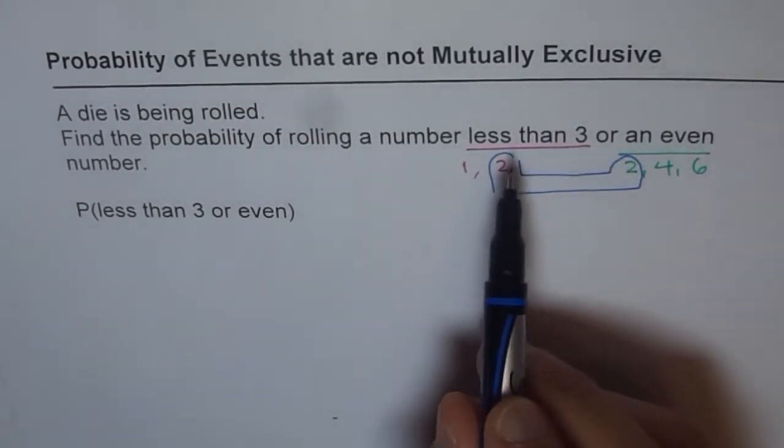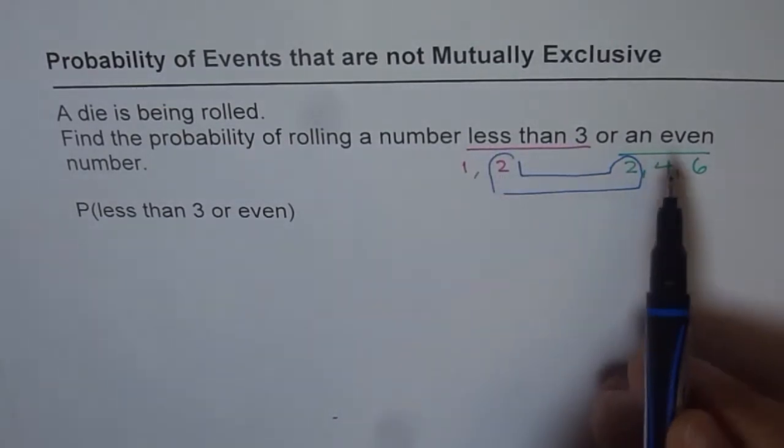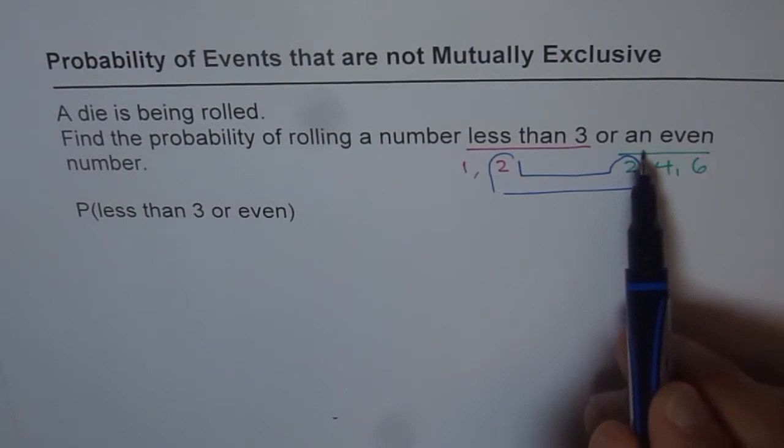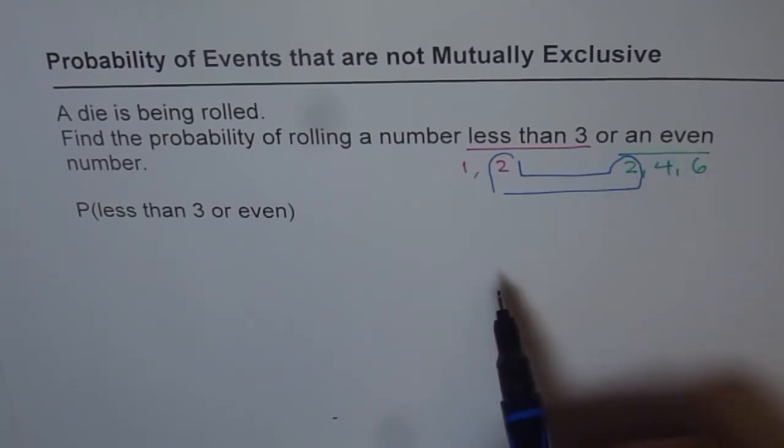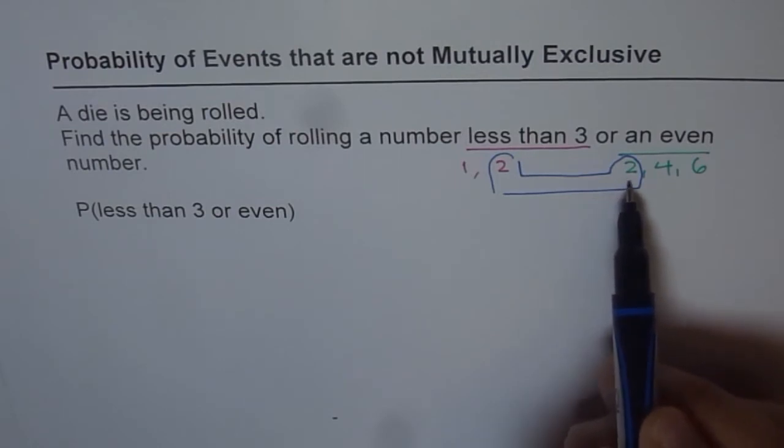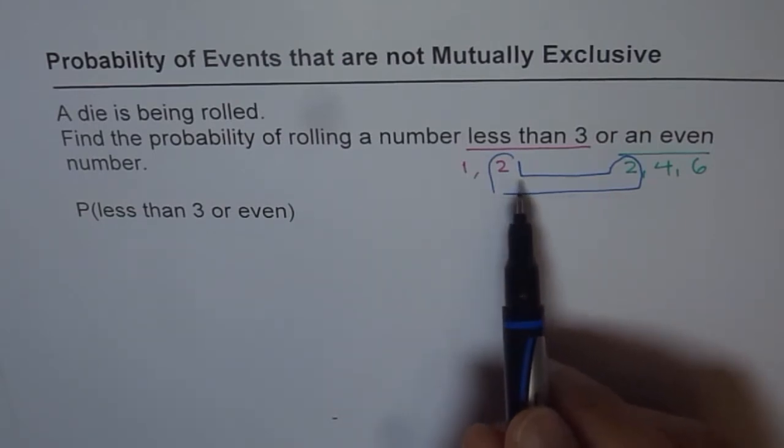So if I try to find probability of less than 3, then I am including 2. And if I try to find the probability of rolling even number, I am also including this probability. So the probability of getting 2 comes 2 times. It is duplicated. So in such cases, this is not mutually exclusive.